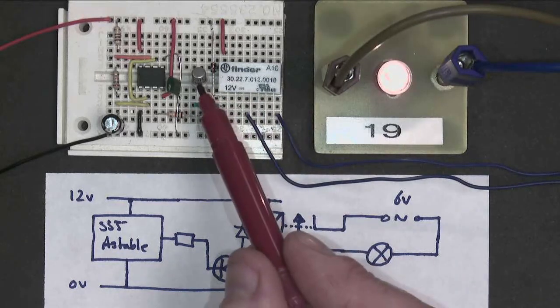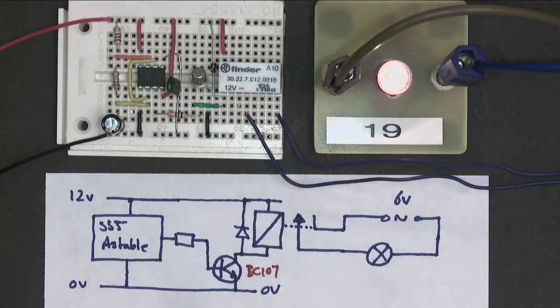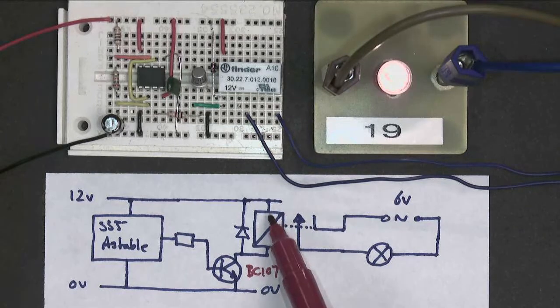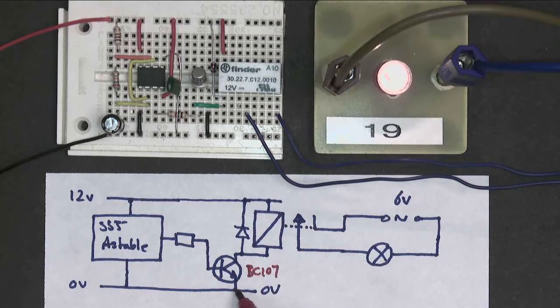So here's the transistor, here's the relay. You can see it's wired up very slightly differently. Now the relay is connected to positive, and then the transistor switch is down to ground.